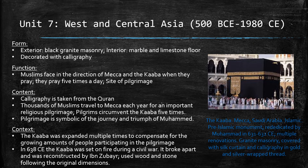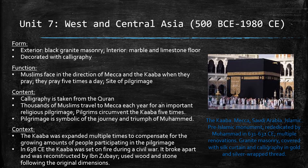For Unit 7, I chose the Kaaba in Mecca, Saudi Arabia, made in 631–632 CE with multiple renovations, made from granite masonry covered with a silk curtain and calligraphy in gold and silver-wrapped thread. The Kaaba has high importance in Islamic culture, and Islam follows five pillars, two of which involve the Kaaba. They are that Muslims must pray facing the Kaaba five times a day, and make a pilgrimage to the Kaaba at least once in their lives. The pilgrimage to the Kaaba is made by thousands of Muslims every year, and is so important because it is symbolic of their journey and triumph of Muhammad. Because this is such a key aspect of Islamic culture, it is safe to say that it represents a part of Muslims' identity.